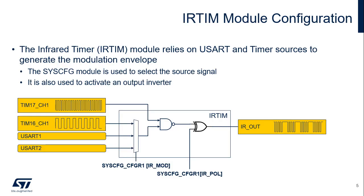The infrared timer (IRTIM) unit requires a modulation envelope signal that is provided either by USART or by TIM16. The IR_MOD field in the SysCFG_CFGR1 register controls the related input multiplexer. The IR_POL bit in the SysCFG_CFGR1 register selects whether the output signal is inverted.